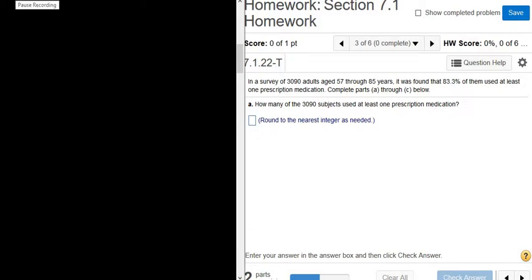In a survey of 3,090 adults aged 57 through 85, it was found that 83.3% of them used at least one prescription medication. Complete parts A through C below. How many of the 3,090 subjects used at least one prescription medication?